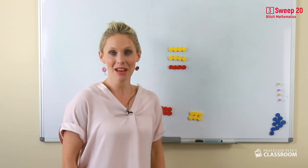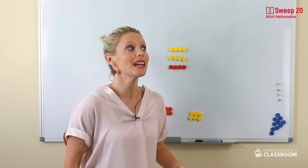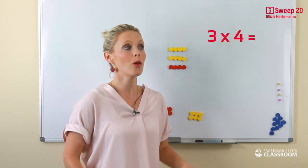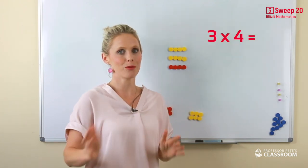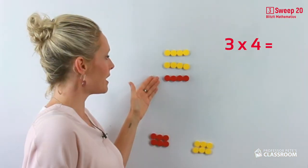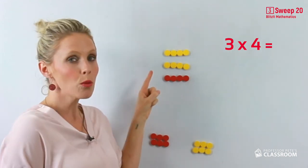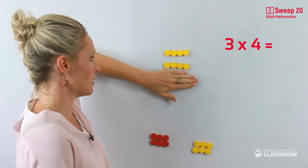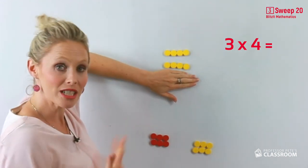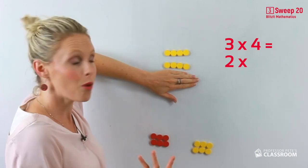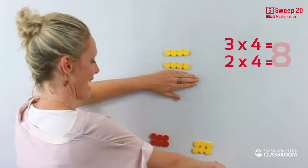Now let's have a look at three times four, or three groups of four. Now if we look here, this is a tricky one, but if you look, you already know two groups of four because that's your doubles. Two groups of four is eight.